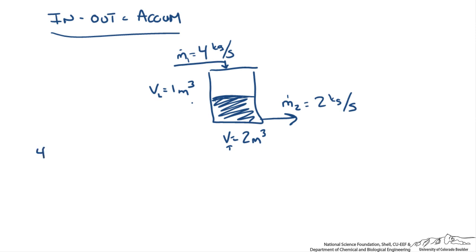So if we write it, again make sure we have the units down. 4 minus 2 kilograms a second out has to be the accumulation. So the accumulation is going to be 2 kilograms per second.